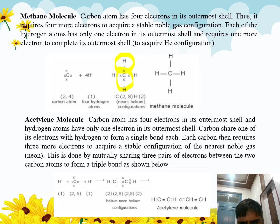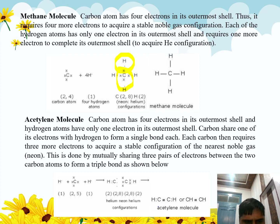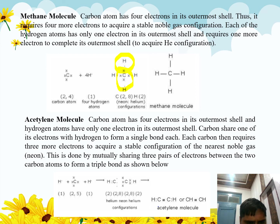In acetylene, carbon has four electrons in its outermost shell and hydrogen has only one electron. Carbon shares one of its electrons with each hydrogen atom, and each carbon requires three more electrons to acquire the stable noble gas configuration, which is achieved by the mutual sharing of three electron pairs between the two carbon atoms, forming a triple bond.